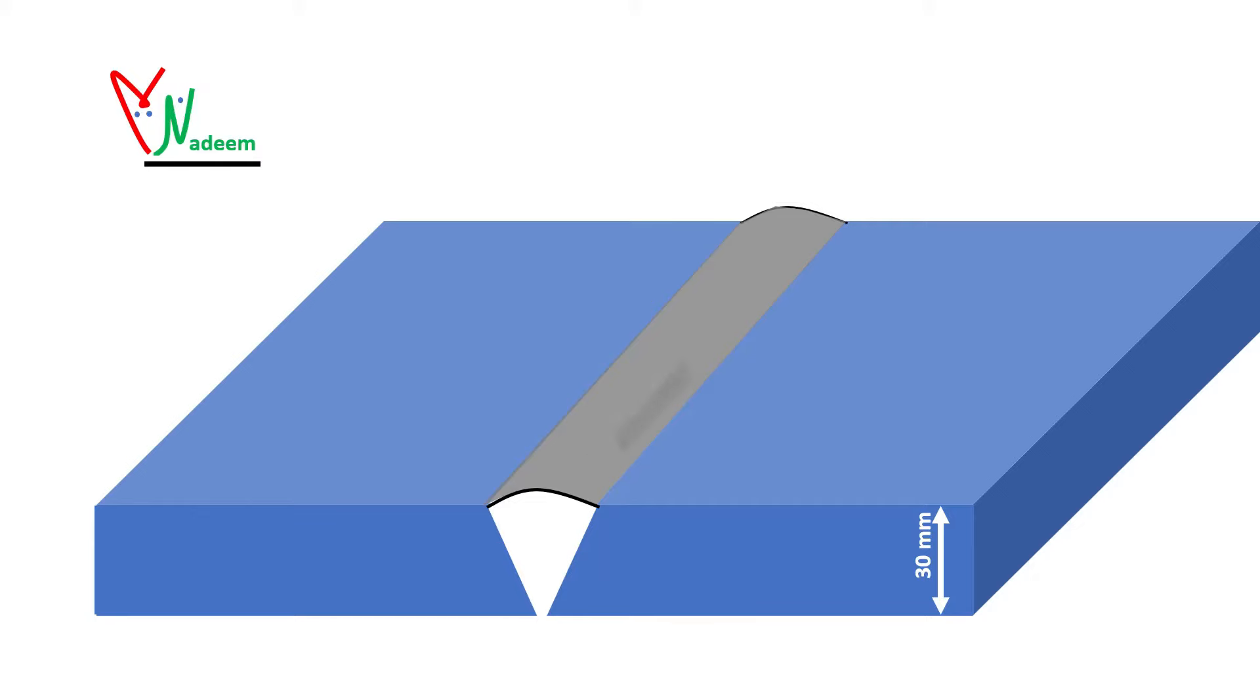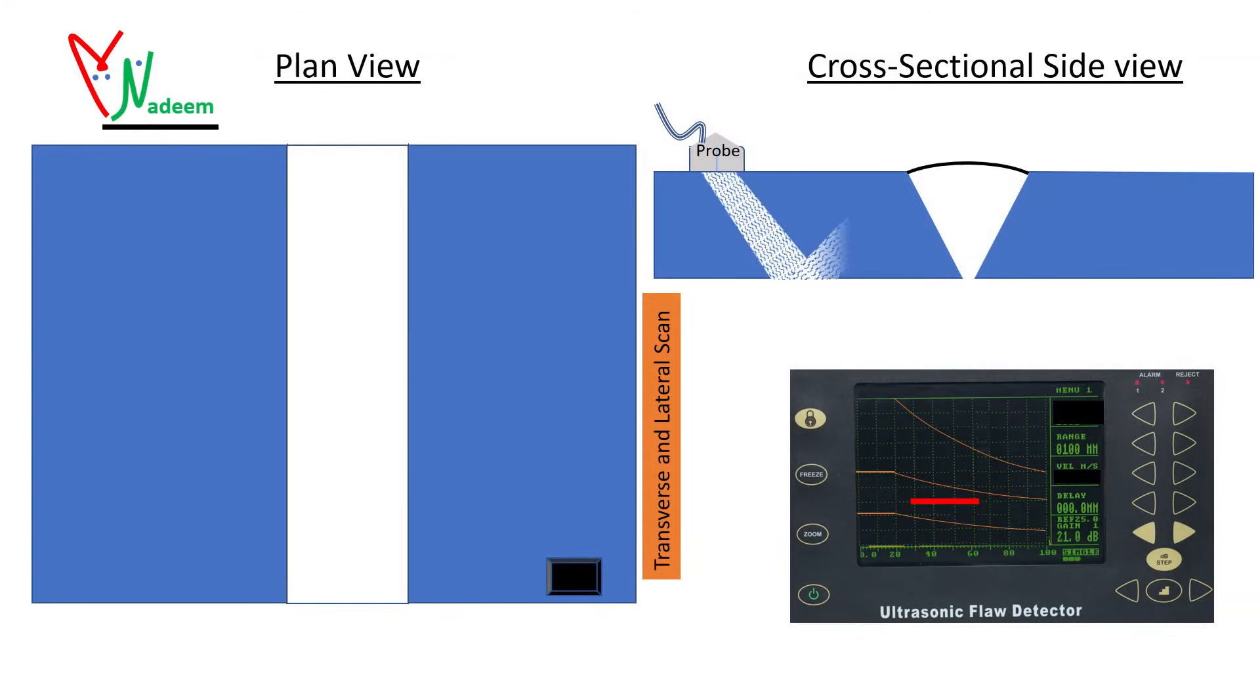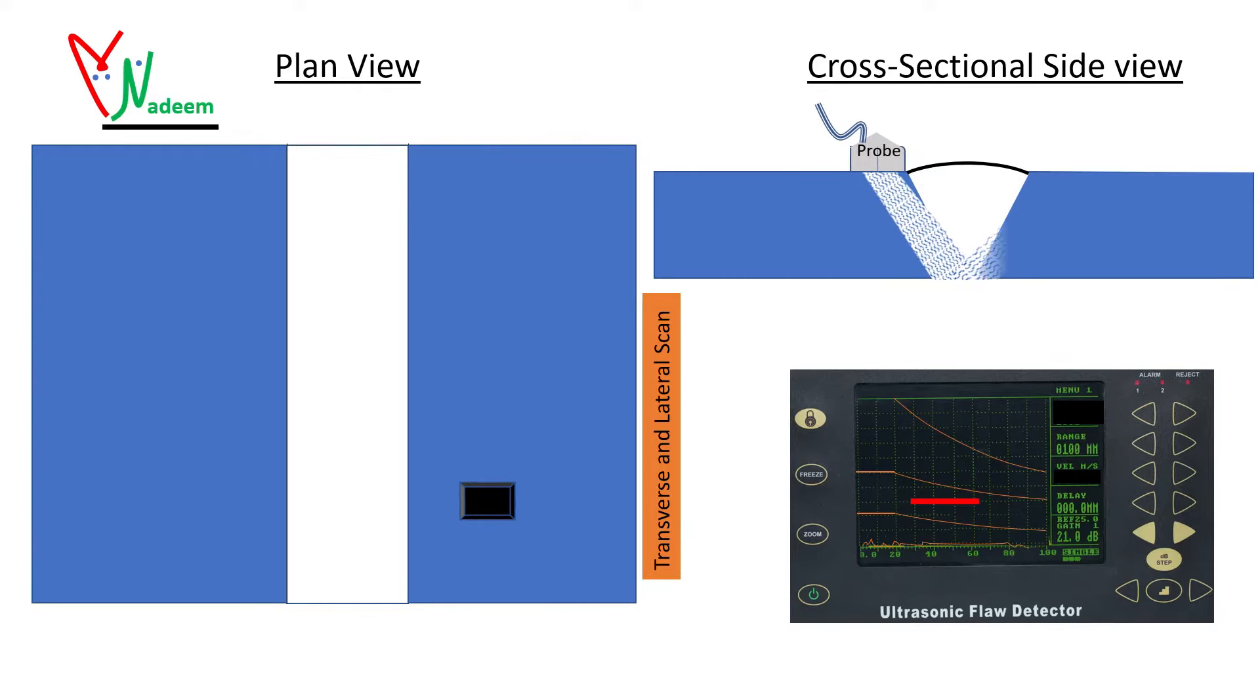Here we have a 30 millimeter thick single V pathway which contains a weld imperfection 20 millimeter depth from top surface with 5 millimeter height and 200 millimeter length. Now we move to the actual scanning. In manual UT for weld scan we move the UT probe back and forth transversely from weld toe to standoff distance.